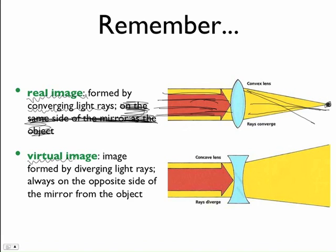Now, a virtual image is an image formed by diverging light rays, and it's not always on the opposite side. I was trying to make it easy, but it's not true. So don't write that part.